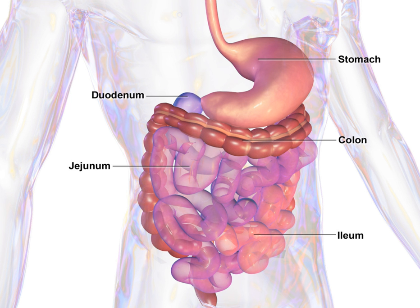The lower gastrointestinal tract includes most of the small intestine and all of the large intestine. In human anatomy, the intestine is the segment of the gastrointestinal tract extending from the pyloric sphincter of the stomach to the anus and consists of two segments, the small intestine and the large intestine. In humans, the small intestine is further subdivided into the duodenum, jejunum and ileum, while the large intestine is subdivided into the cecum, ascending, transverse, descending and sigmoid colon, rectum, and anal canal.